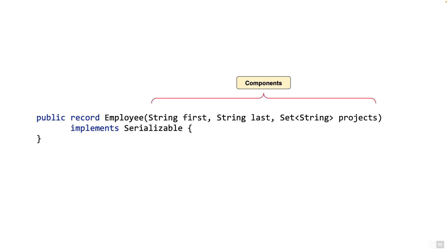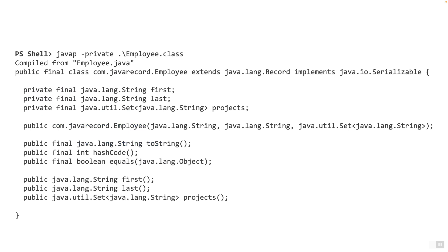Now let's see the generated class. Java provides us with a command called javap to look at the internals of the class. If we use the javap command on the employee class created from the record, this is what the class will look like. Look at what the compiler created for us automatically. You can see the class extending from java.lang.record. This also means that the record cannot extend from another class. You can also see that the class itself is final, so no one can extend from it.